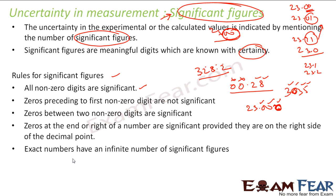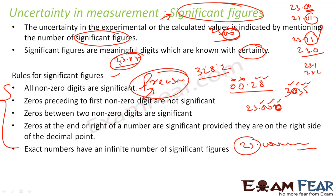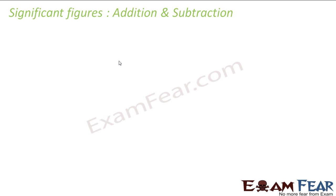Rule 5: Exact numbers have an infinite number of significant figures. For example, the number 23 — it has infinite significant figures because you can write 23 as 23.000 infinite number of times. So significant figures are used for precision; they are meaningful digits which are known with certainty. When you say 23.87, you are sure about all these digits.